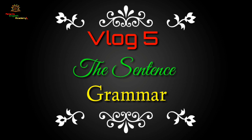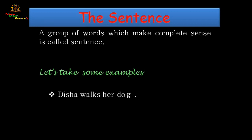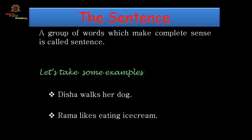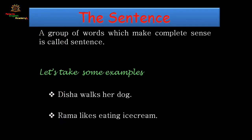The first topic of basic grammar is about sentences. So let's get started. A sentence is a group of words that are put together to mean something. A group of words which makes complete sense is called a sentence.